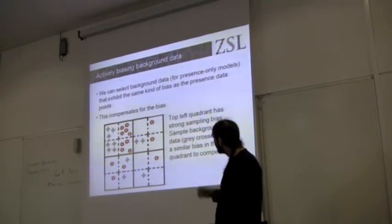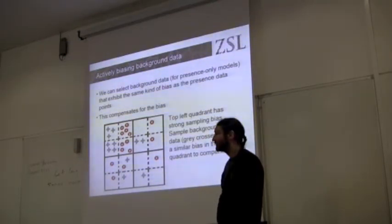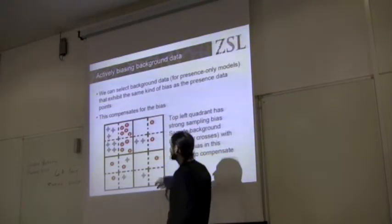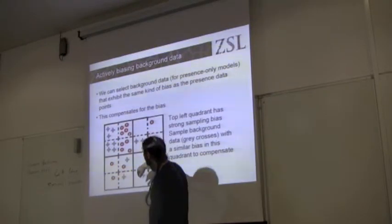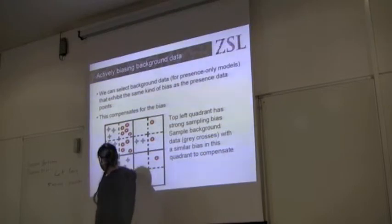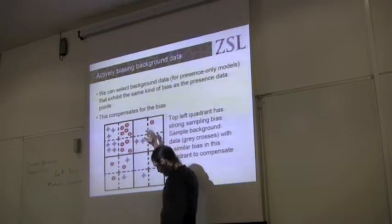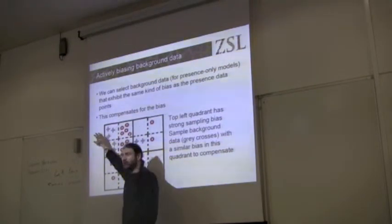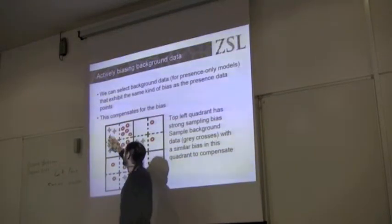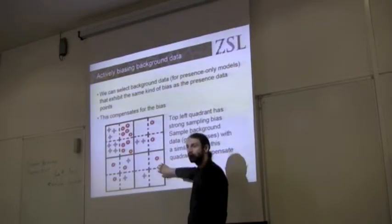So a simple pictorial representation of what's going on here. We've got our grid, and our red dots represent our observations of our species. Certain areas within our grid are more densely sampled than others. Here, this area is more densely sampled, and this area is less densely sampled.